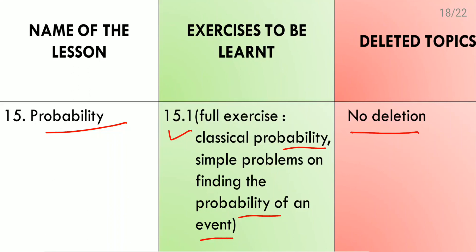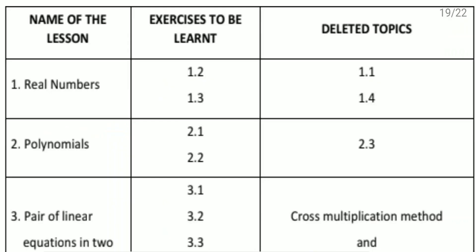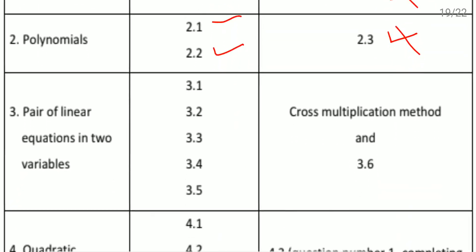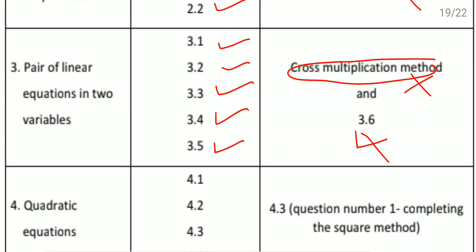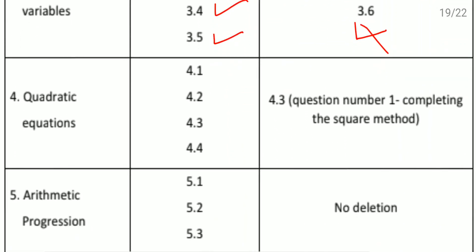Now a quick summary of what we covered. Real Numbers: exercises 1.2 and 1.3 to do; 1.1 and 1.4 deleted. Polynomials: 2.1 and 2.2 to do; 2.3 deleted. Pair of Linear Equations: exercises 3.1 through 3.5 to do, but cross multiplication method sums and exercise 3.6 are not to be done. Quadratic Equations: all exercises to do, but completing the square method in exercise 4.3 is removed.